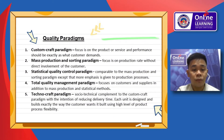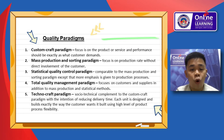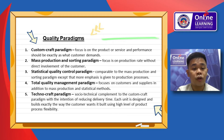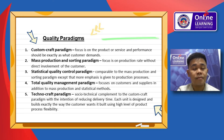When it comes to the quality paradigm, the five paradigms are: the custom craft paradigm, the mass production and sorting paradigm, the statistical quality control paradigm, the total quality management paradigm, and the technocraft paradigm. The custom craft paradigm focuses on the product or service, and performance should be exactly as what the customer needs or demands. Mass production and sorting focuses on production rate without direct customer involvement. Statistical quality control is comparable to mass production but with more emphasis on production processes. The total quality management paradigm focuses on customers and suppliers in addition to mass production and statistical methods. The technocraft paradigm is a socio-technical complement to the custom craft paradigm with the intention of reducing delivery time.